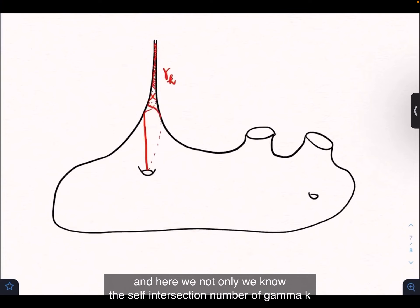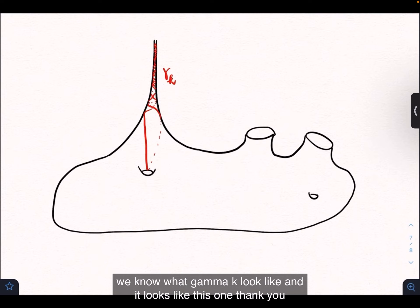Here, not only do we know the self-intersection number of gamma_K, we know what gamma_K looks like. It looks like this one. Thank you.